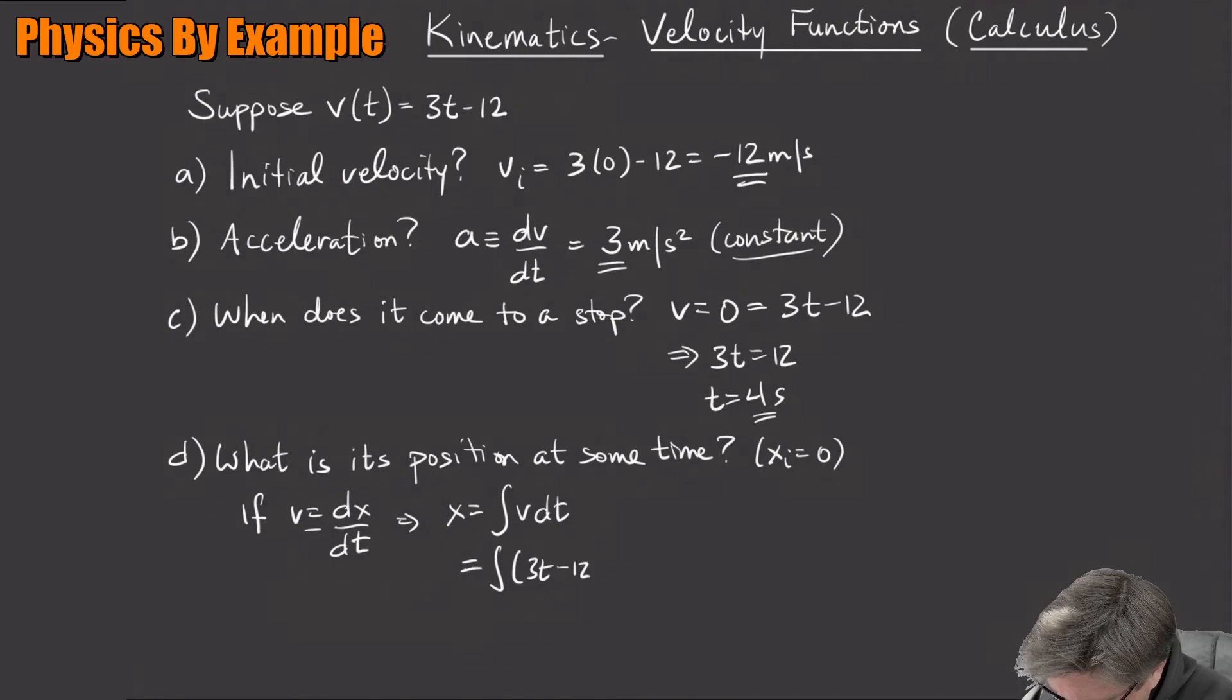If I integrate 3t minus 12, the 3 comes out, the integral of t dt is just t squared over 2, so this is just going to be 3 halves t squared minus 12t.